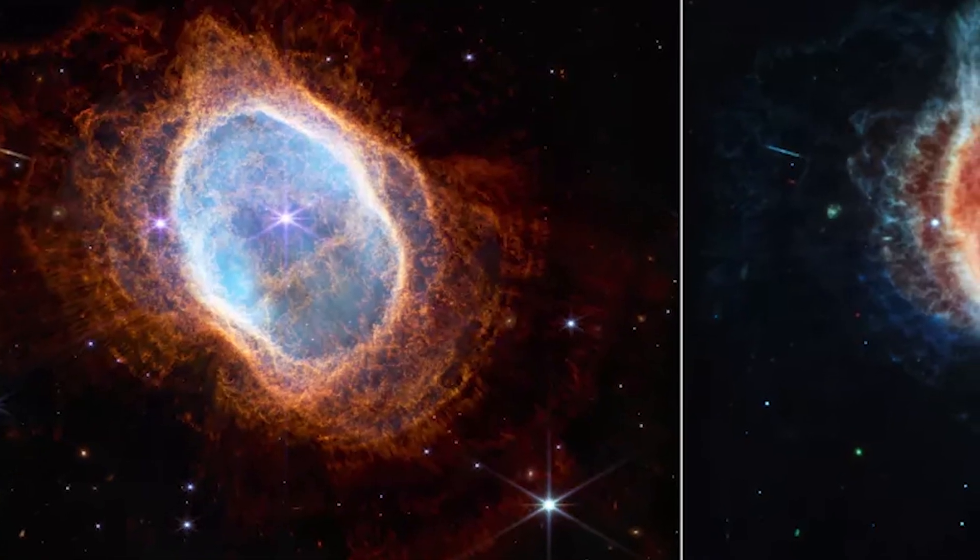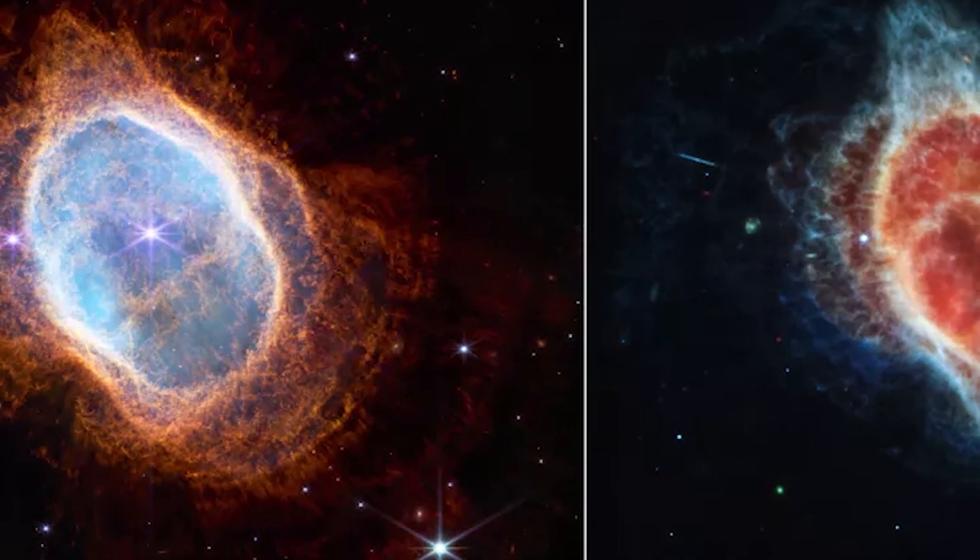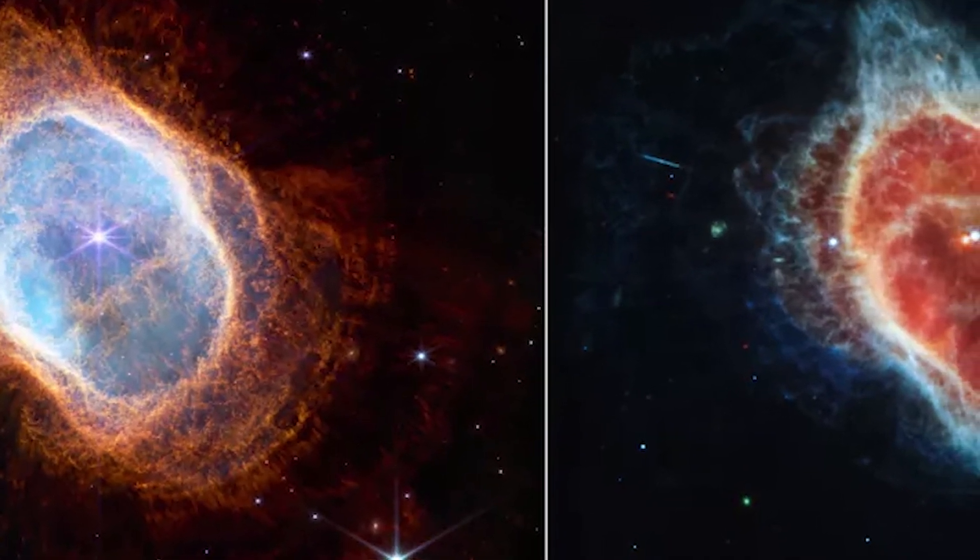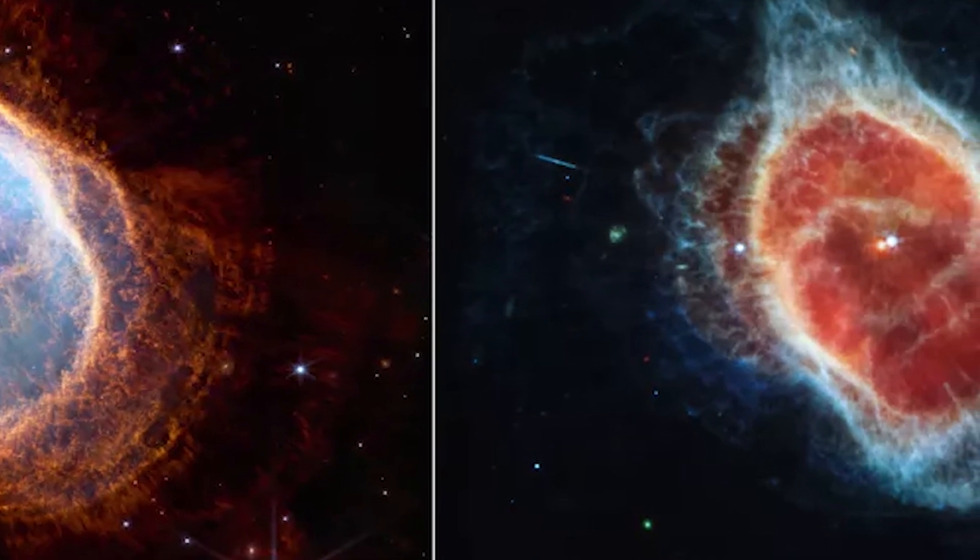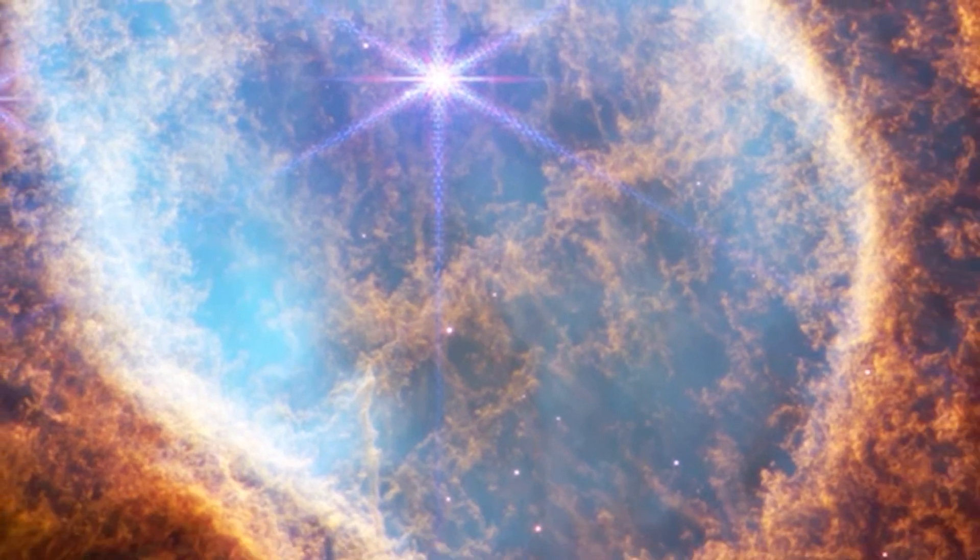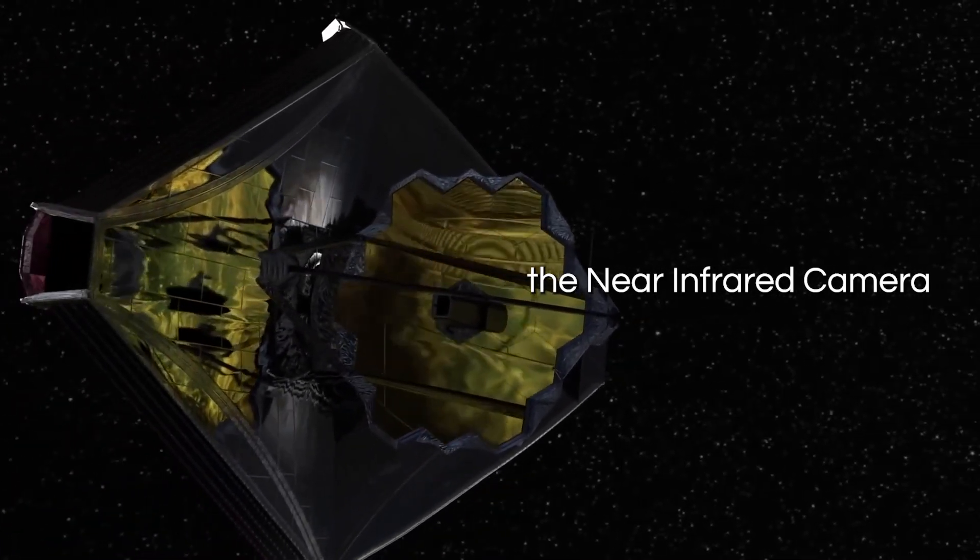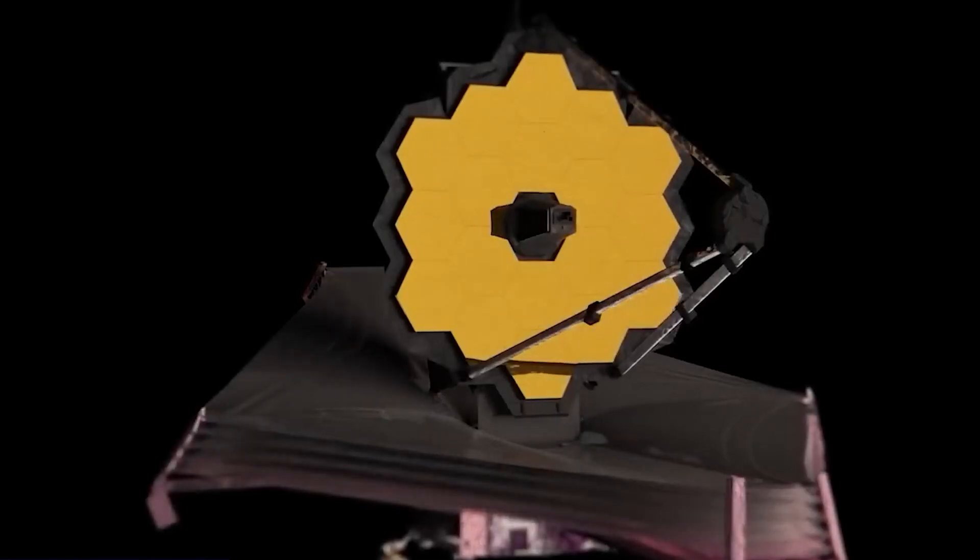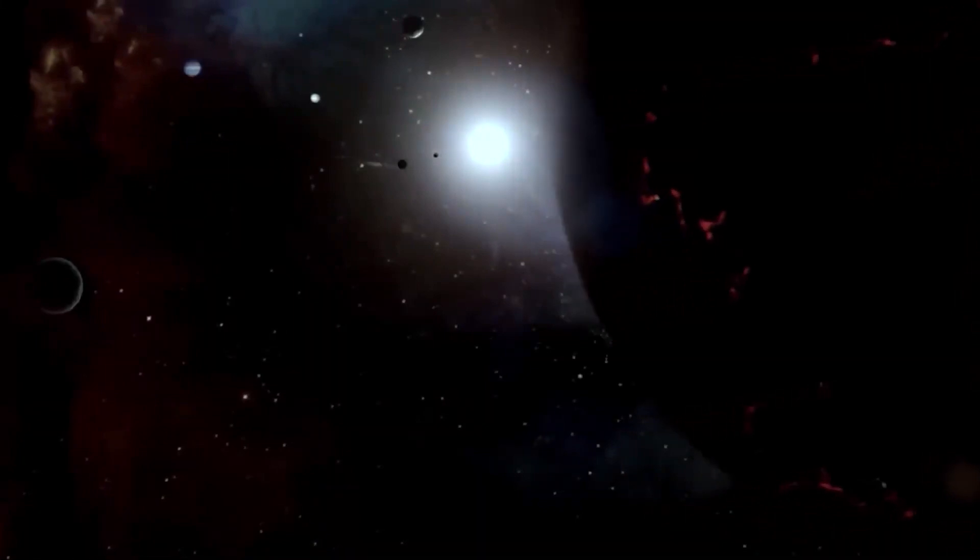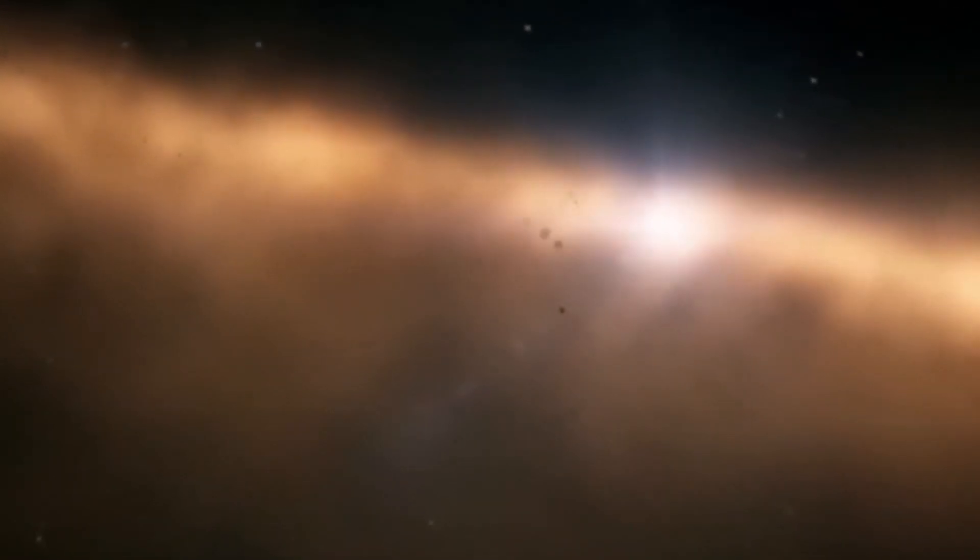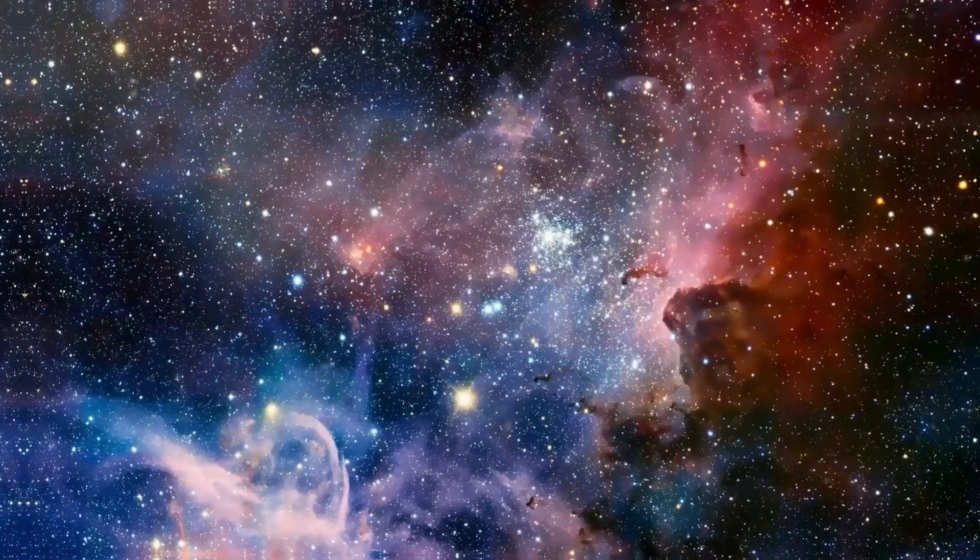You will be enchanted by the enigmatic beauty of the Southern Ring Nebula, also known as the Eight Burst Nebula, due to its distinctive figure-eight shape. Located approximately 2,500 light-years away from Earth, this colossal cloud of gas and dust emerged from the powerful expulsion of a dying star. However, Webb's groundbreaking image shattered these assumptions and revealed a much more complex history.